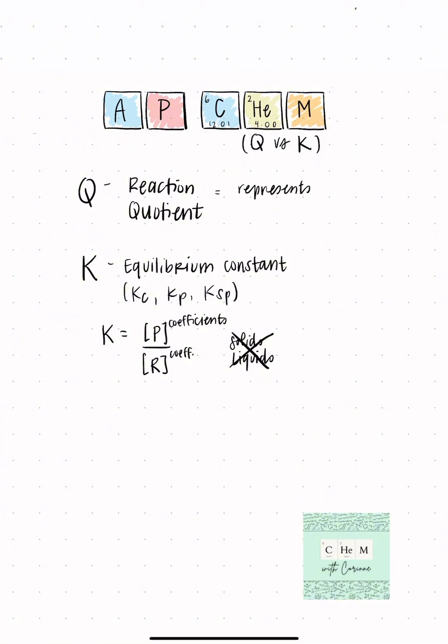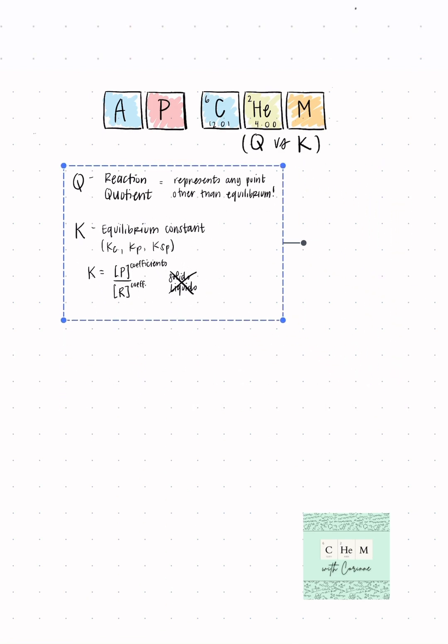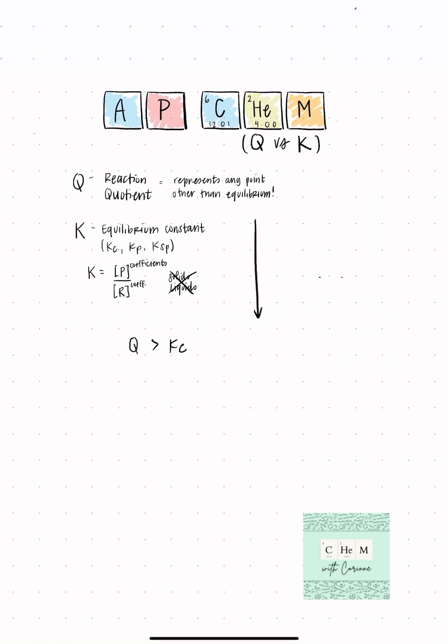Guess what? Q is actually exactly the same. The difference is that it is known as the reaction quotient, and it basically measures the relationship at any point other than equilibrium. And basically, you're going to compare Q versus K to see where the reaction is. Are we making more product? Are we making more reactant? Or are we at equilibrium?